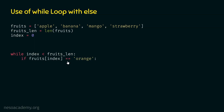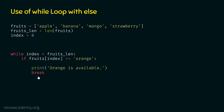If fruits[index] equals orange — here index is zero, so this is fruits[0], which is apple — we are comparing apple with orange. If this condition is satisfied, we must print 'orange is available' and then break the loop. We need the break keyword because we don't want to continue comparing the rest of the items with orange once we've found it. This is the abnormal termination. After this, if the condition is not satisfied, we must increment index by one. This line must not be indented because the increment must happen even if the inner condition is not satisfied.